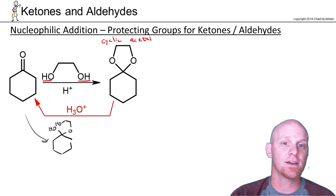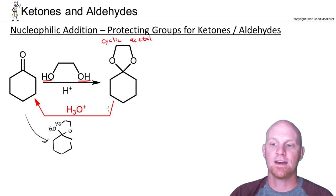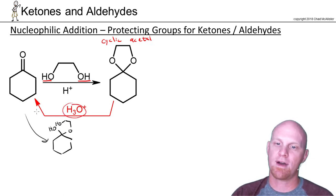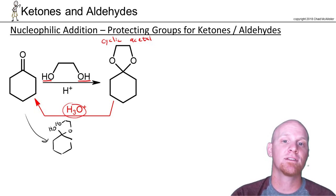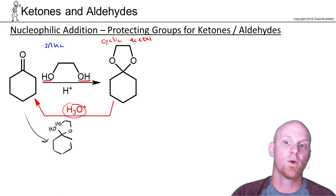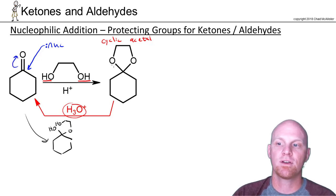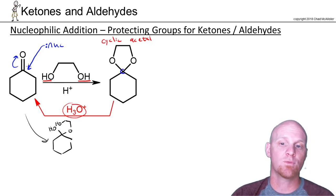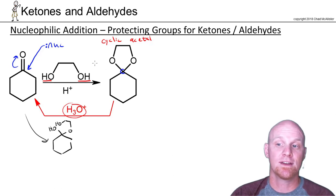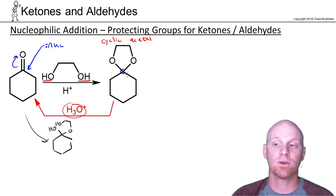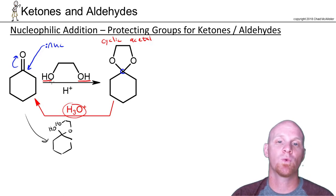There are two things that are really nice about this cyclic acetal. One, it is completely reversible — you just add H3O+, and it comes right back off, and you get your ketone back. The second thing is how it reacts with a nucleophile — more specifically, how it doesn't. This carbon is not going to be electrophilic the way a ketone's carbonyl carbon would be, so nucleophiles don't react with these. If you want to protect a ketone from nucleophilic attack, you can temporarily turn it into a cyclic acetal, then deprotect it with H3O+ when you're done.